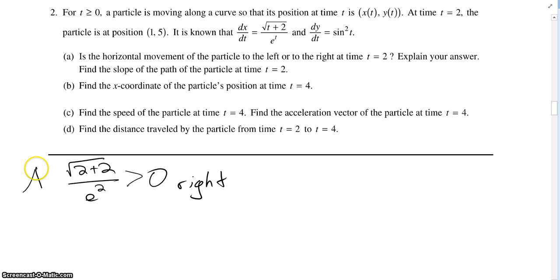And then explain our answer. So this dx/dt is the velocity of the particle at a given time, which direction the particle is moving.